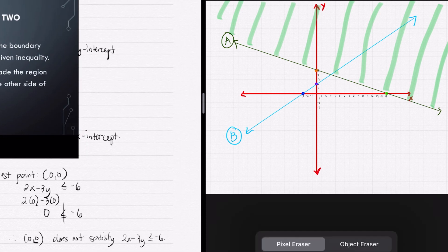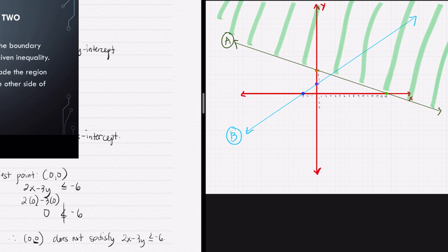Notice that (0, 0) is still below inequality B. And since (0, 0) does not satisfy that inequality, we will shade the other region instead.